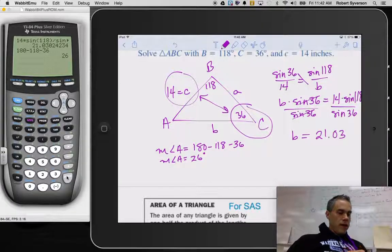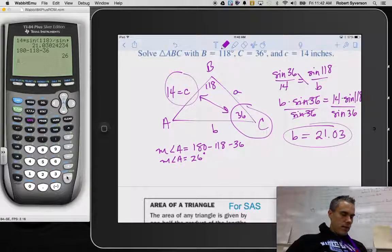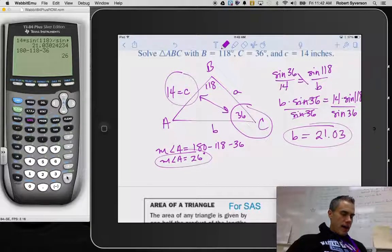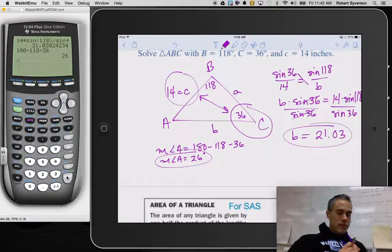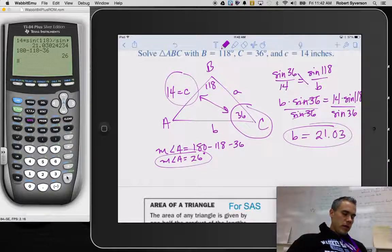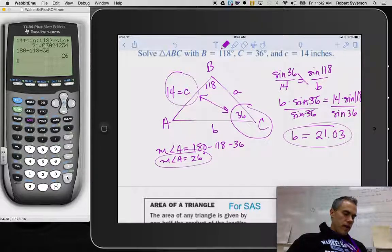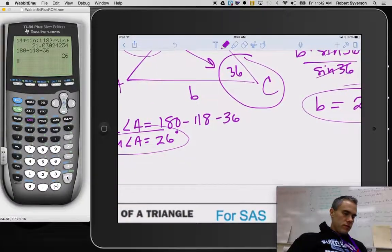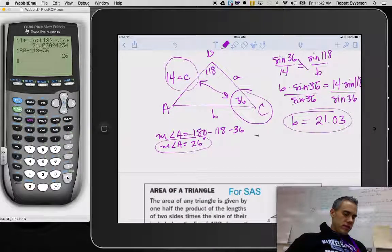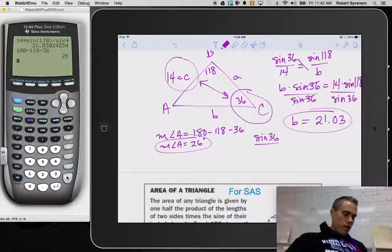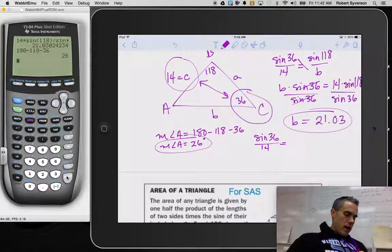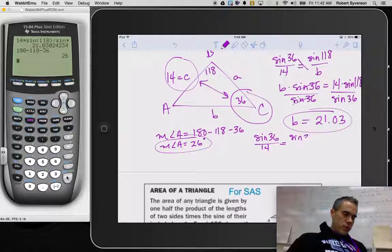So the last thing I have to find now that I have a, so I've got the missing side b. I've got the missing angle a. Now I have to find that missing side a. And I'm going to use that same angle pair with c to start things off just in case I made a mistake with b. I don't want to repeat that mistake. So I'm going to go in and we will find the measure of side a. So again, I take that sine of 36 over 14, just like I started with, to find my other missing side, is equal to the sine of 26 over side a.